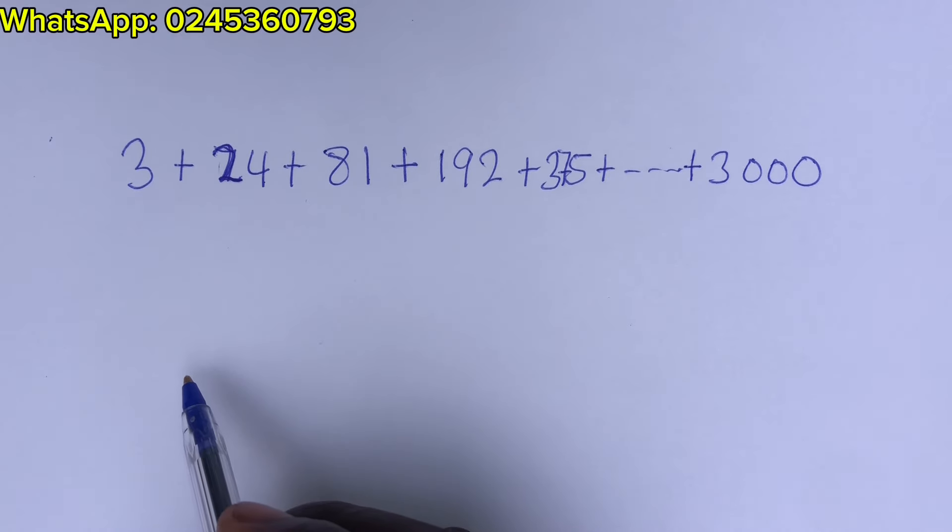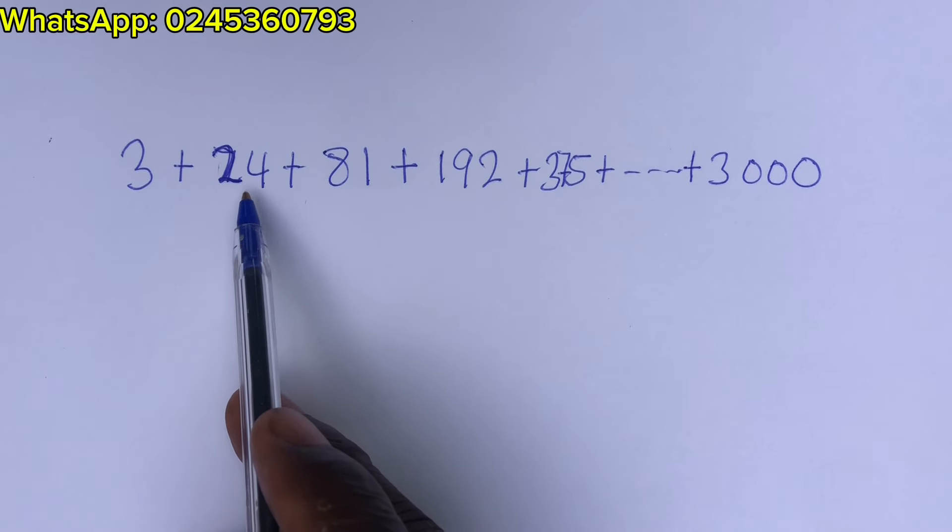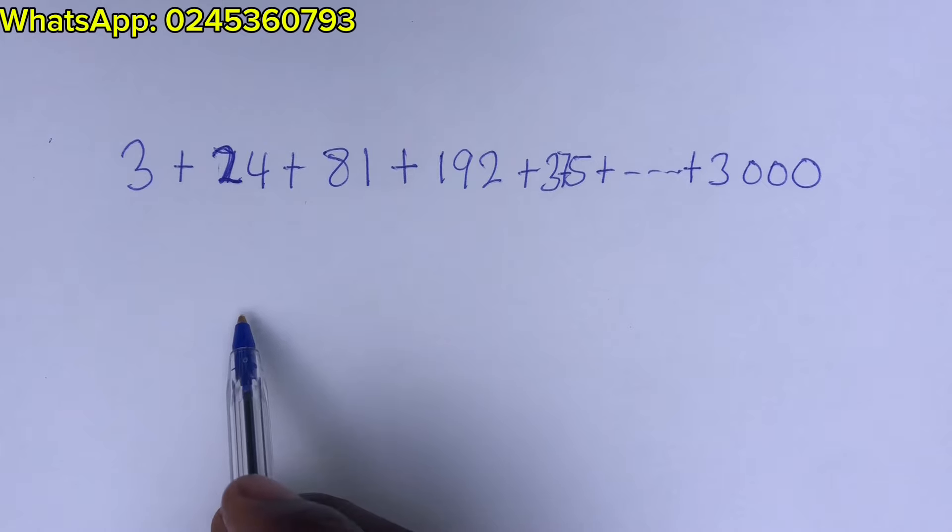Now, let us check this. If we take 3 from 24, we get 21. If we take 24 from 81, we don't get 21. So this is not a linear relation.